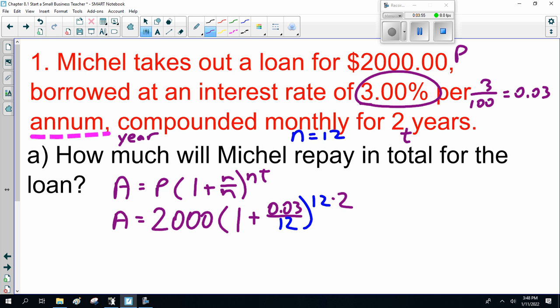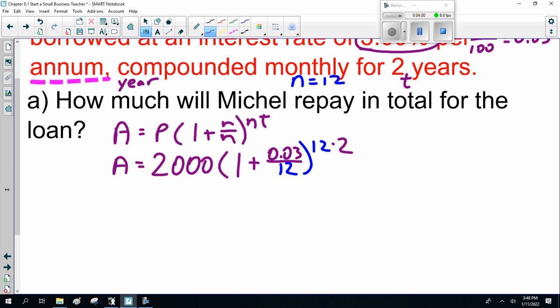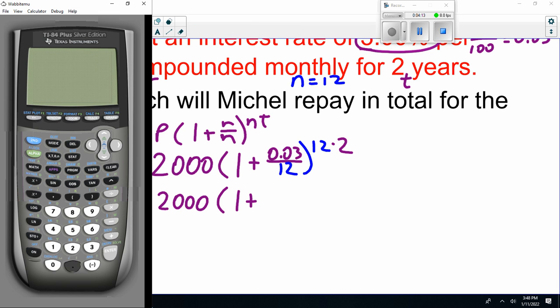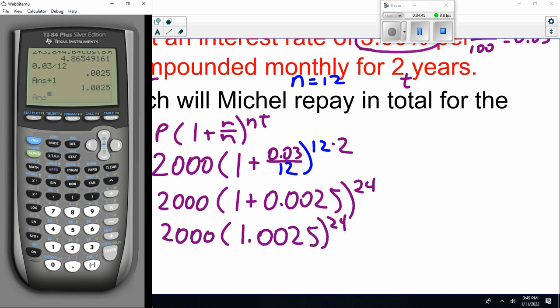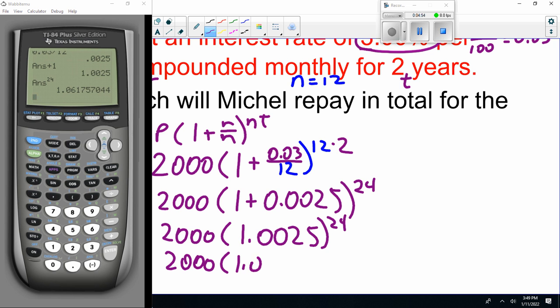This is just like the sine and cosine law. You've got to plug the numbers into the formula. So, $2,000 times (1 plus 0.03 divided by 12) to the power of 24. That's 0.0025. 2 times 12 is 24. So that's 2,000 times 1.0025 to the power of 24, which equals 2,000 times 1.061762.